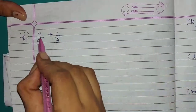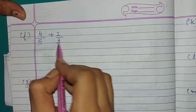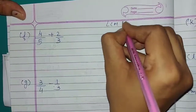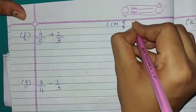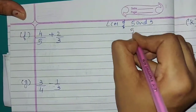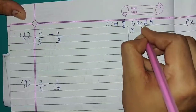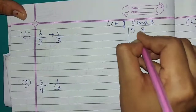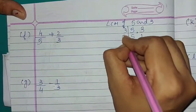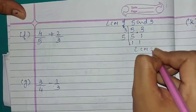Question number F: 4 upon 5 plus 2 upon 3. These are unlike fractions. We will take LCM of 5 and 3, which equals 15.